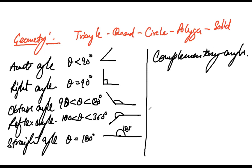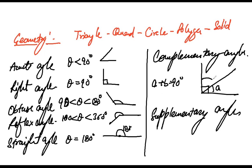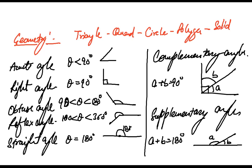Two more important terms: complementary angles and supplementary angles. There can be direct questions based on these terms, so there should be no confusion between them. Complementary angles are angles which sum up to 90 degrees — if this angle is A and this angle is B and together they make 90 degrees, they are complementary. Supplementary angles are angles that sum up to 180 degrees — if angle A and angle B together make 180 degrees, they are called supplementary angles.